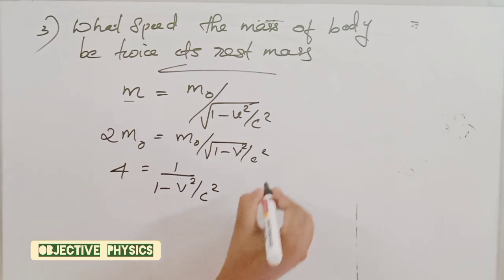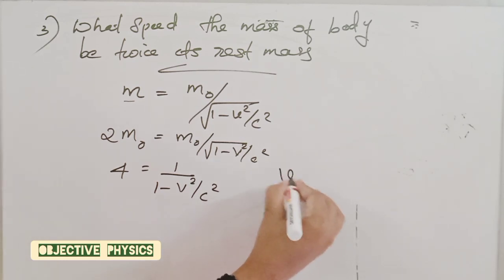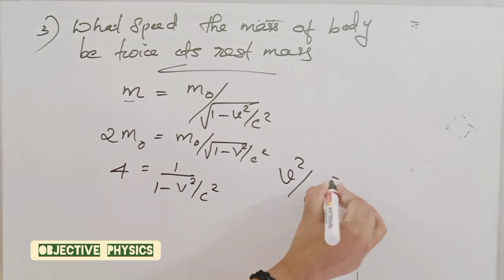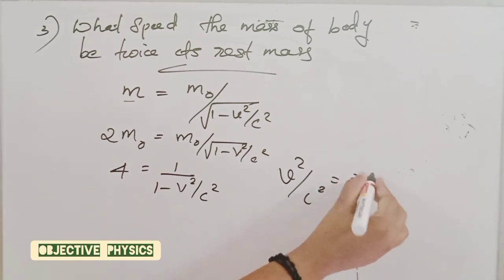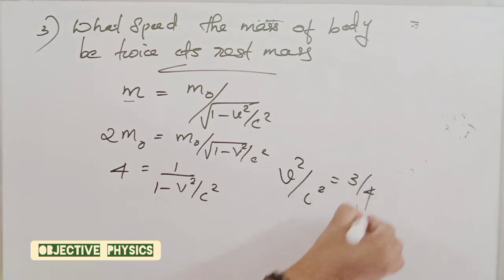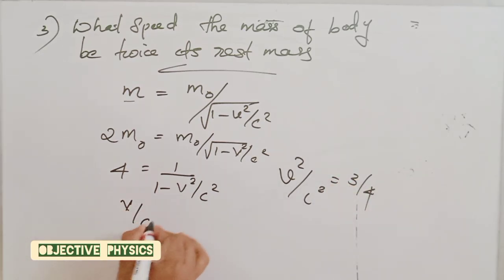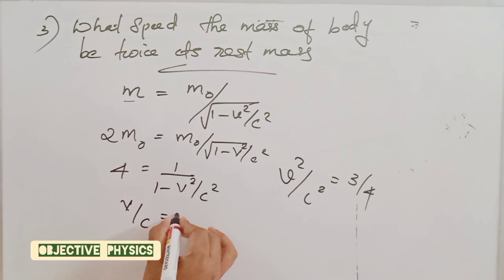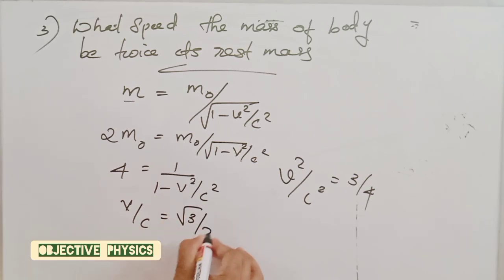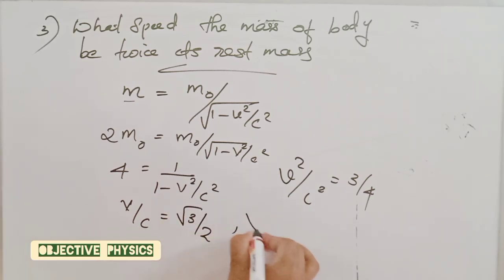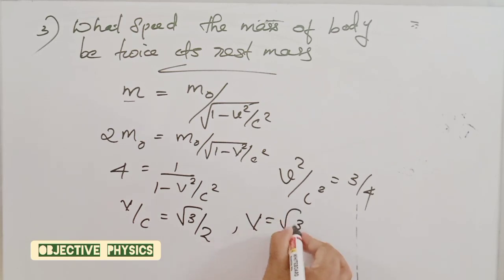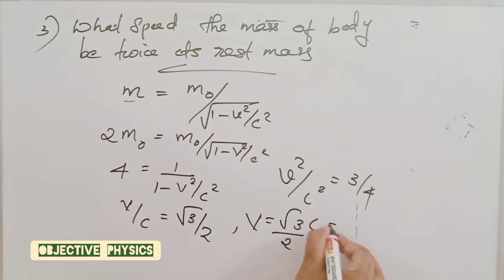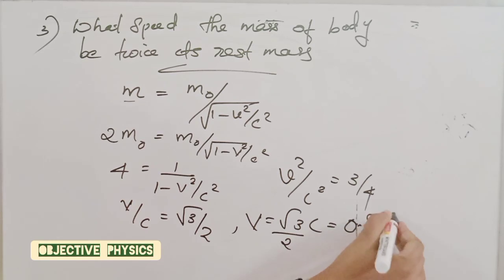That gives 4 equals 1 divided by (1 minus v²/c²), or v²/c² is equal to 3 by 4. Therefore v by c is equal to root 3 by 2, that is v equals (√3/2)c, which is 0.866c.